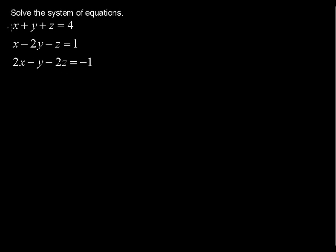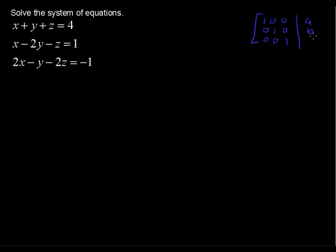Remember, we're going to take the coefficients of all the x's, the y's, and the z's, and the constants, and put those into an augmented matrix. Ultimately we want that matrix to have a diagonal of 1's and then some values a, b, and c, which will be our values of x, y, and z.